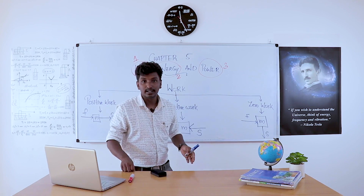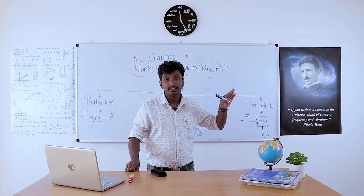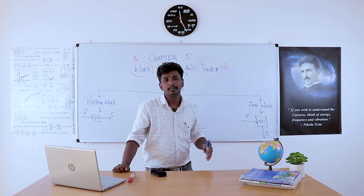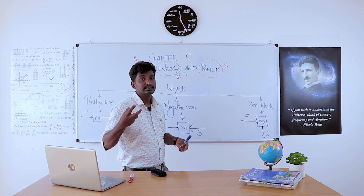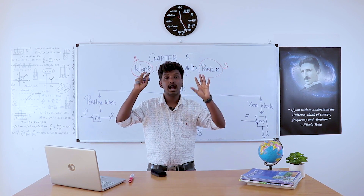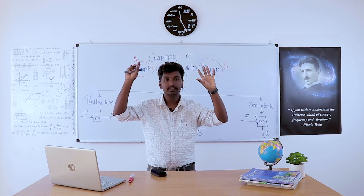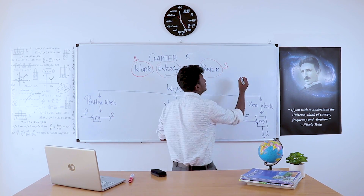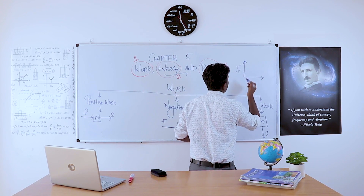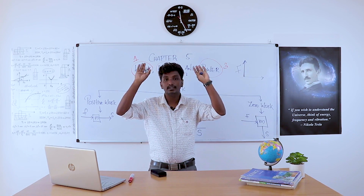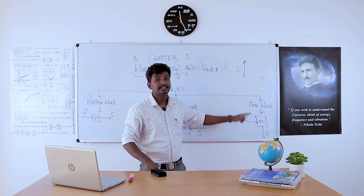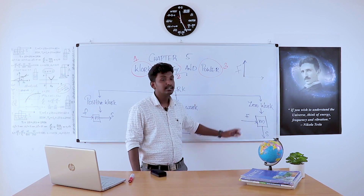For zero work, if the displacement is perpendicular to the applied force, work is zero. For example, when I carry a load on my head and walk forward, I apply force upward to carry the load, but my direction of motion is forward. The applied force and the displacement are perpendicular to each other, so the work done is zero.